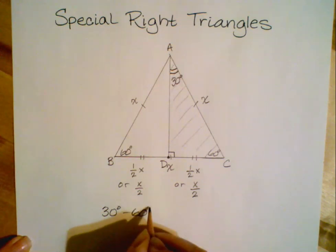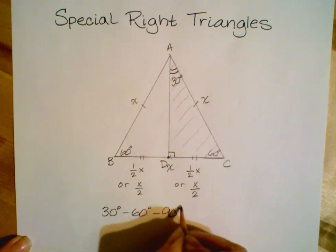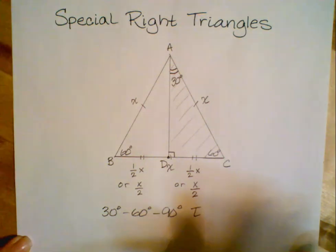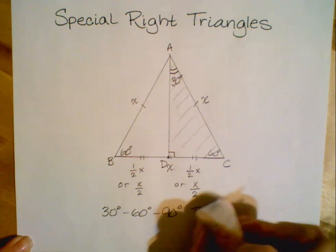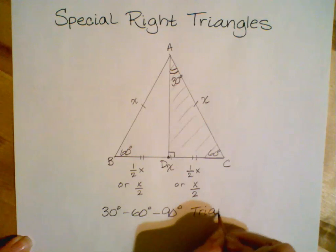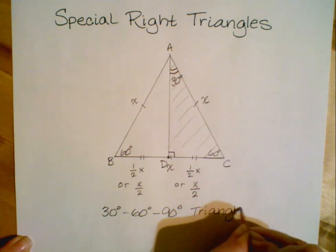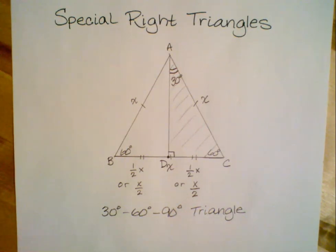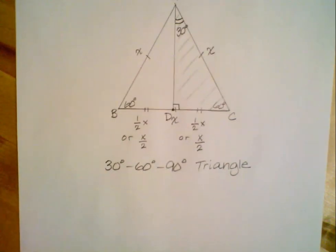Now the 30-60-90 triangle has different relationships in its side lengths than the 45-45-90 does. We've already determined here that the angles in the triangle, first of all, none of them are equivalent to each other. They don't have the same angle measures as the 45-45-90 did.